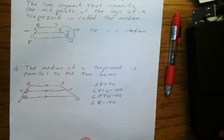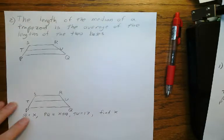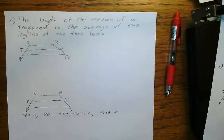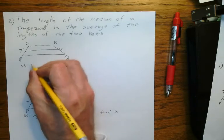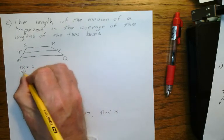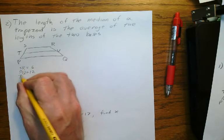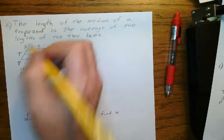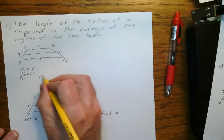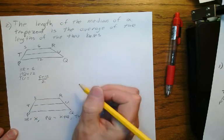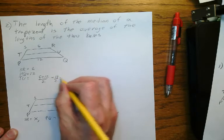There's another interesting property about the median of a trapezoid — property two. The length of the median of a trapezoid is the average of the lengths of the two bases. How do you find the average of two things? You add them up and divide by two. So let's say SR is 6 and PQ is 12, and we want to find TU. TU equals 6 plus 12 divided by 2. 6 plus 12 is 18, divide by 2 is 9.